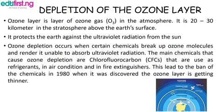The function of the ozone layer is that it protects the earth against ultraviolet radiation from the sun. Ozone layer depletion occurs when certain chemicals break up ozone molecules and render it unable to absorb ultraviolet radiation. The main chemicals that cause ozone depletion are chlorofluorocarbons (CFCs), which are used as refrigerants in air conditioners and in fire extinguishers. This led to the banning of the chemical in the 1980s when scientists discovered that the ozone layer was getting thinner.